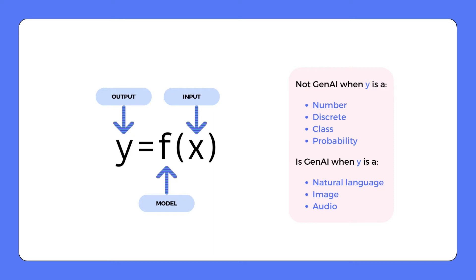We can imagine this mathematically. The equation y equals f of x computes the outcome based on varying inputs. y symbolizes the result from the model, f stands for the function used in the calculation, and x represents the input or inputs used in the equation. In simple terms, the model's output is a function of all the inputs.